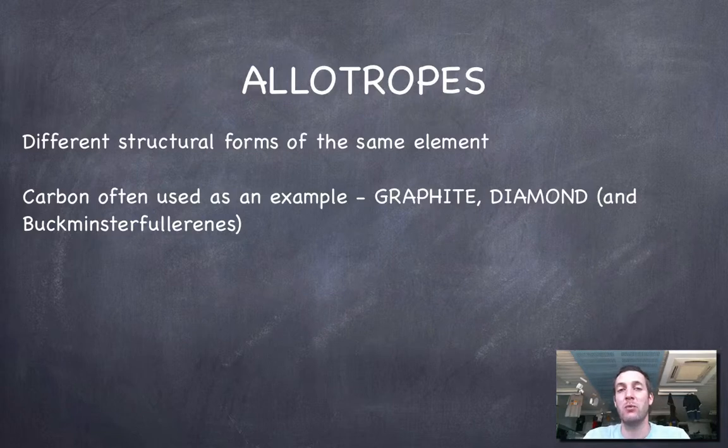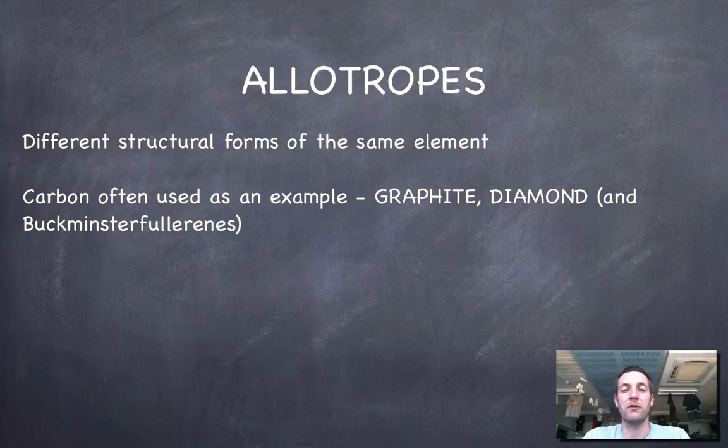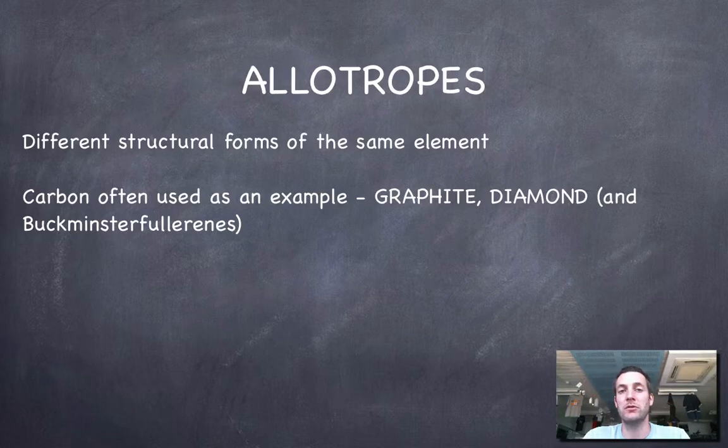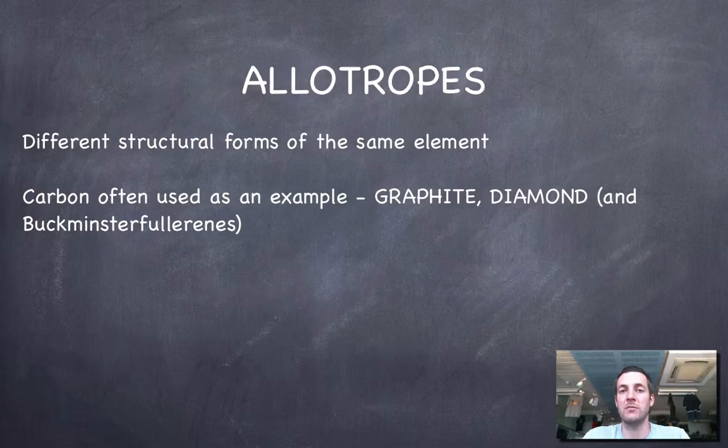This word sounds fairly similar to isotopes which talks about different atomic forms of the same element - atoms with the same number of protons but different number of neutrons. Allotropes are different structural forms of the same element. It doesn't tell us about what's inside the atoms, just about how the atoms are joined together.